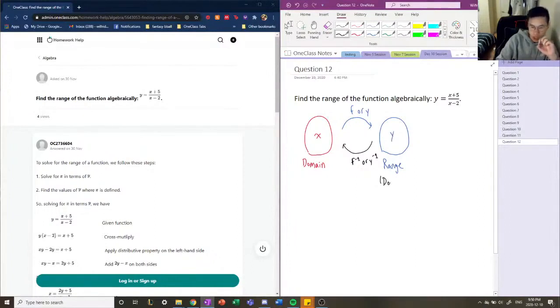So now, the domain of the inverse function is going to be the range. And the range of the inverse function is going to be the domain of the original function. And that makes sense, okay?